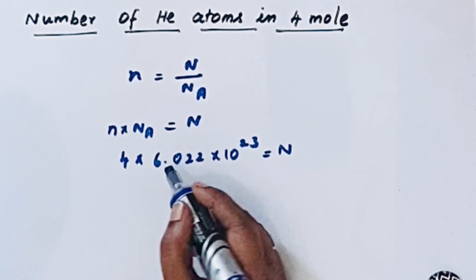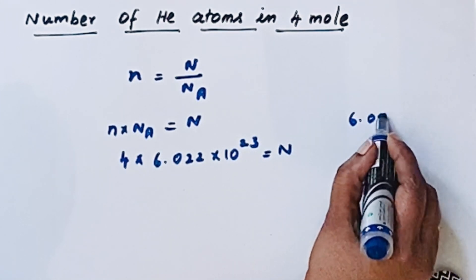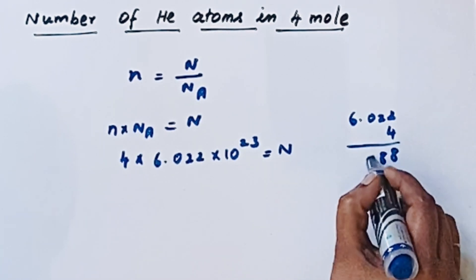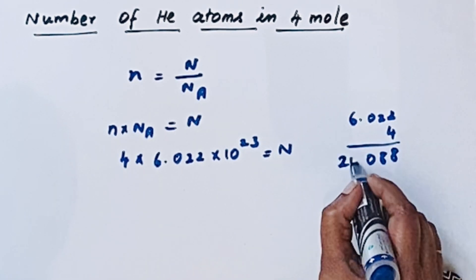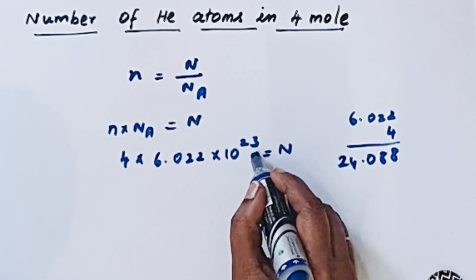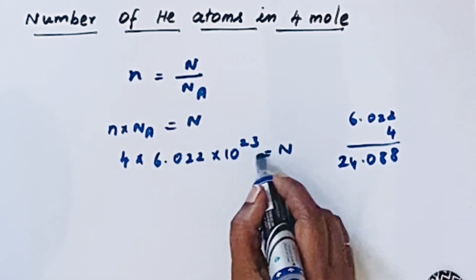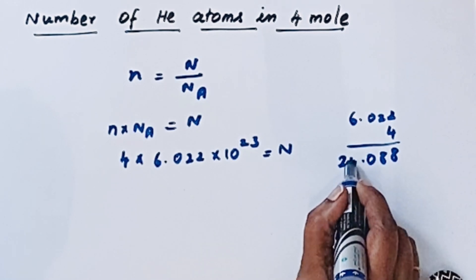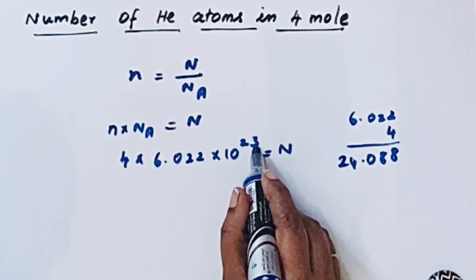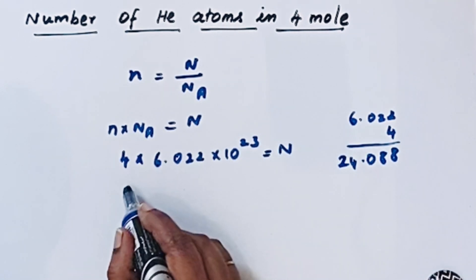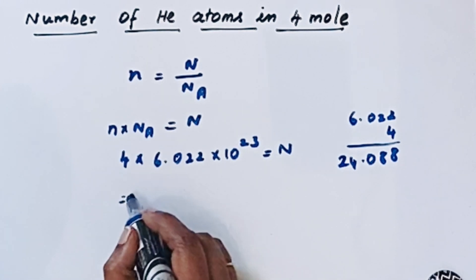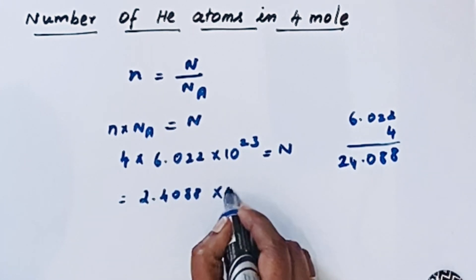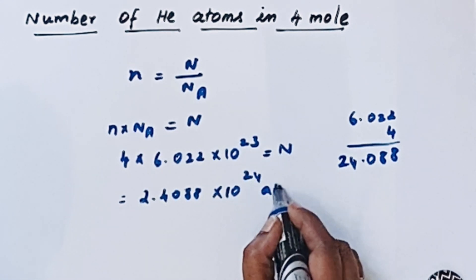If we multiply, first we are multiplying these two: 6.022 times 4 equals 24.088. But that should be in scientific notation, so we bring the decimal to the left and add one to the exponent. The answer is 2.4088 × 10²⁴ atoms.